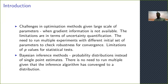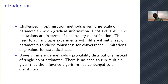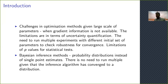Bayesian inference is similar to optimization. Like in evolutionary algorithms you have evolution, here we have sampling. It's all about proposing new solutions and evaluating a fitness function. In evolutionary algorithms, you evaluate a fitness function, whereas in Bayesian inference you evaluate a likelihood function. During the sampling process, some solutions are accepted and some are rejected, and all the accepted solutions become part of the posterior distribution.